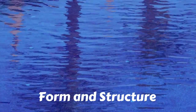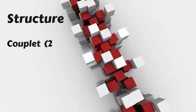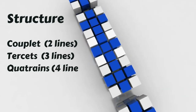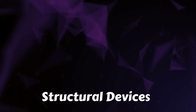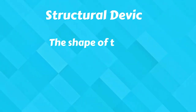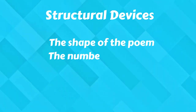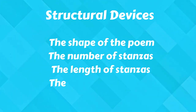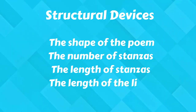Once you understand the form of a poem, it helps you understand the structure. Structure is how the poem is organised. Are the stanzas written in couplets, tercets or quatrains? You also need to identify the structural devices and explain why they're important. Think about how the poem appears on the page linked to its meaning and effects, including the overall shape, number of stanzas, length of stanzas, length of lines, and the movement between lines and stanzas.